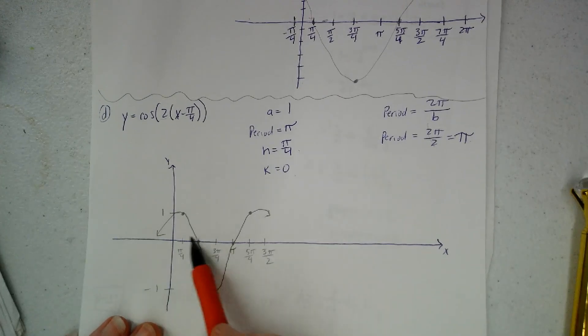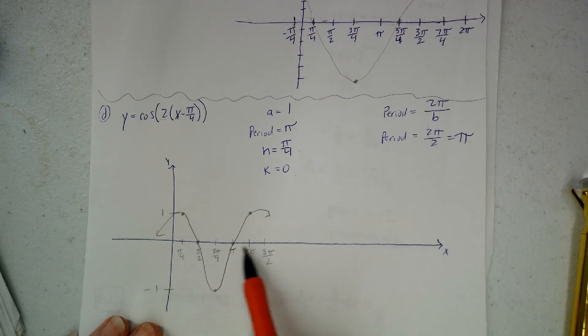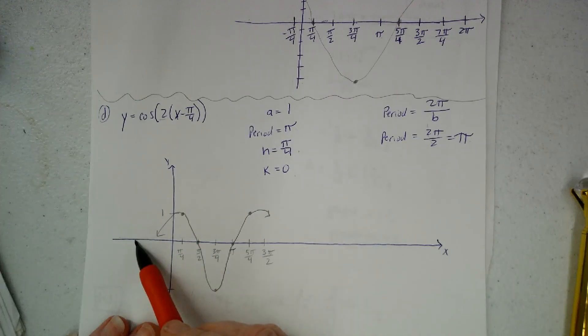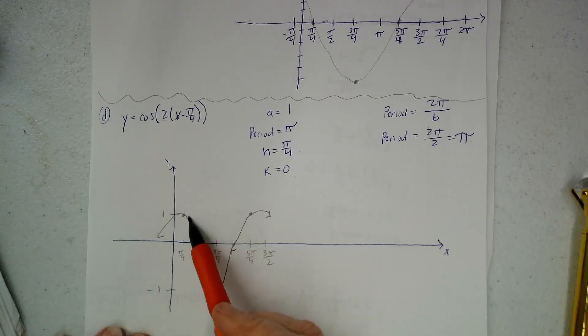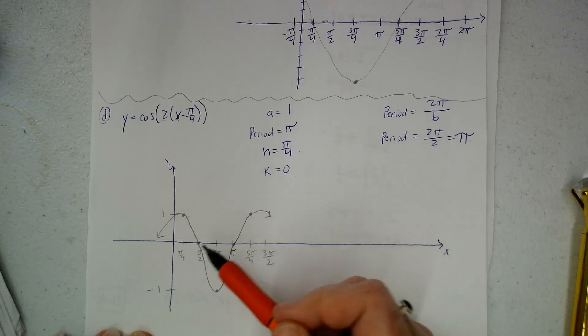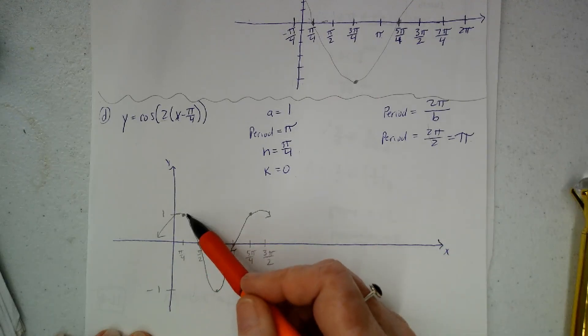H is π over 4 and k is 0. So I know my center line is just going to be on the x-axis. I know the first point in my graph is going to be at π over 4. And that's a high point. My amplitude's 1, so the high point's just going to be right here.